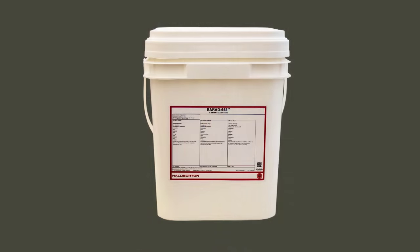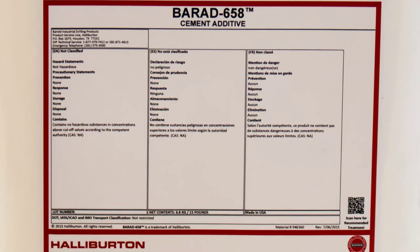Now for the second part of the demo, we'll see what happens when you add an engineered additive to a cement slurry. In this case, it's Bayrad 658.